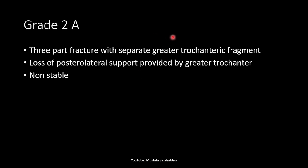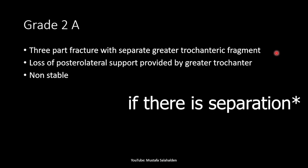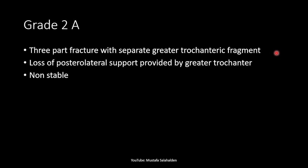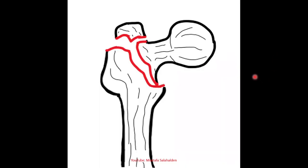For grade two A there is a three-part fracture with a separate greater trochanter fragment. When the greater trochanter fragment is displaced, there is a loss of the posterior lateral support provided by this fragment, and this fracture is considered non-stable.